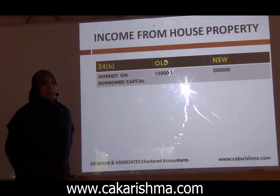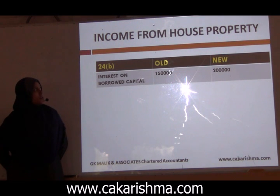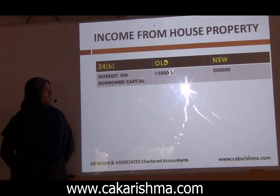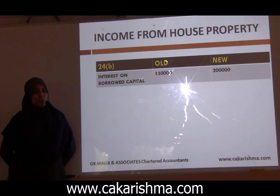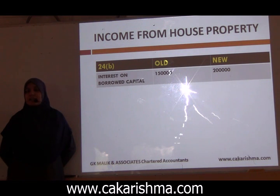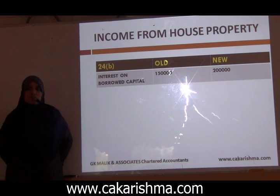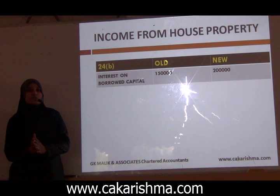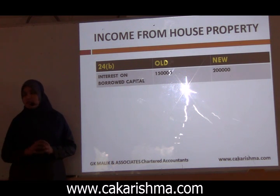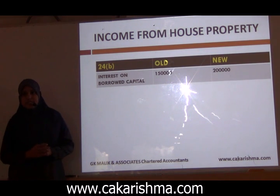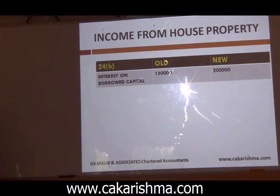We would discuss amendments chapter wise. Income from house property — as we all know, the interest limit under section 24B has been enhanced from rupees 1.5 lakhs to 2 lakhs. This limit is applicable for self-occupied house property. So please remember when you are computing deduction under section 24B, interest deduction is no more 1.5 lakhs, it is 2 lakhs.